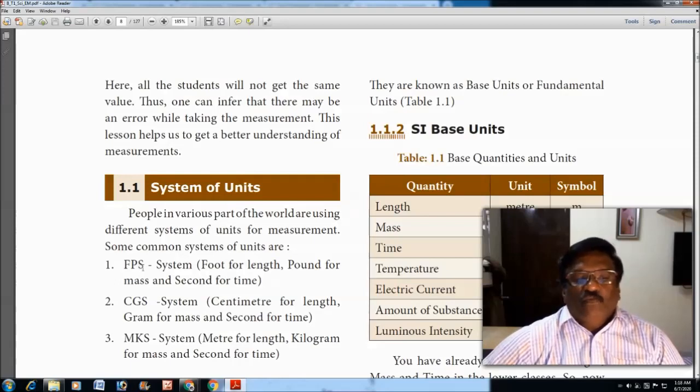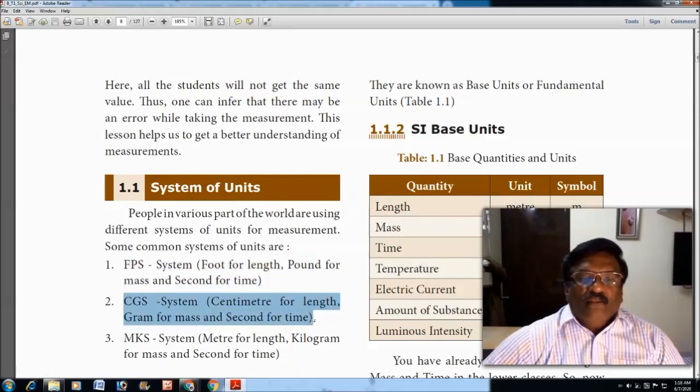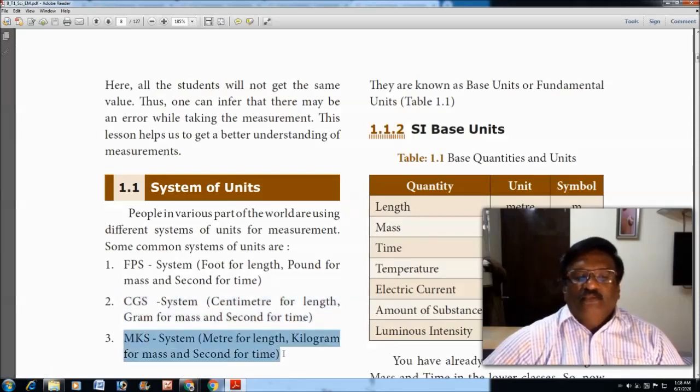In the FPS system, foot for length, pound for mass, and second for time was used. The next system is the CGS system, where centimeter for length, grams for mass, and second for time is used. In the third one, the MKS system, meter for length, kilogram for mass, and second for time is used.